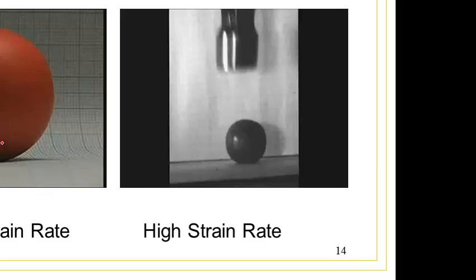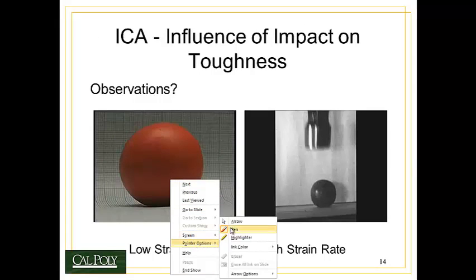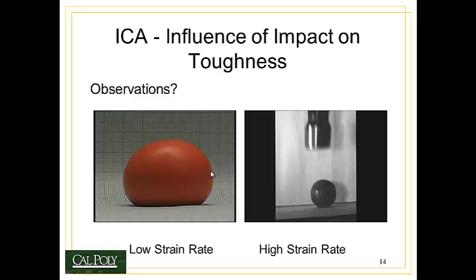So let's take a look at the same material under two different loadings. So this is the idea of impact toughness. So we'll start off over here with silly putty in the form of a ball that is simply laid down onto a table. And what you can see is that the silly putty, because it's being loaded fairly slowly, exhibits a very high amount of plastic deformation. Silly putty absorbs a lot of energy when loaded under low strain rate conditions.